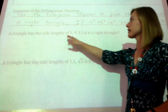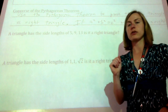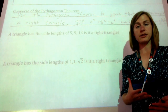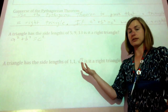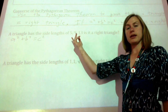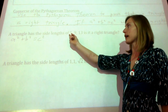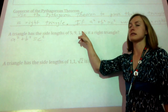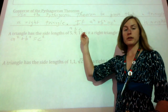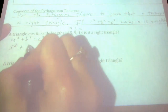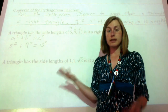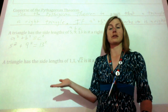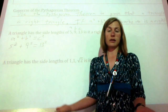The first triangle has side lengths of 5, 9, and 13. Is it a right triangle? We just need to throw those numbers into the Pythagorean theorem and see if it works. Let's write down the Pythagorean theorem, then put in those numbers. Obviously 13 is going to be our hypotenuse because it's the longest side. 5 and 9 can be either a or b — I always like making a the smaller side, so I'll put in 5 for a. So we have 5 squared plus 9 squared equals 13 squared. We're going to see if that's really true.